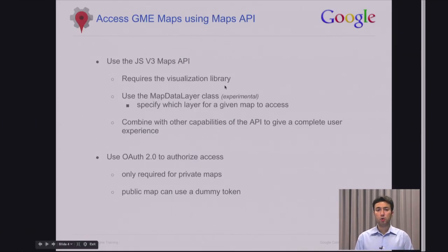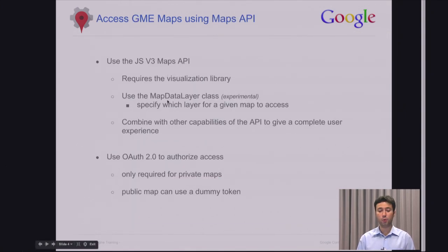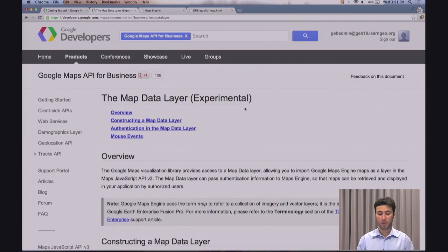To do part 2, you'll need to use the visualization library available within the JavaScript API. The first thing you want to do is modify the line that calls the JavaScript API to include one more parameter called libraries, with the value equal to visualization. Once you've done that, you use the map data layer class within the visualization library to call Maps Engine and extract a layer to be displayed as an overlay on top of the map. Let's take a look at the documentation site.